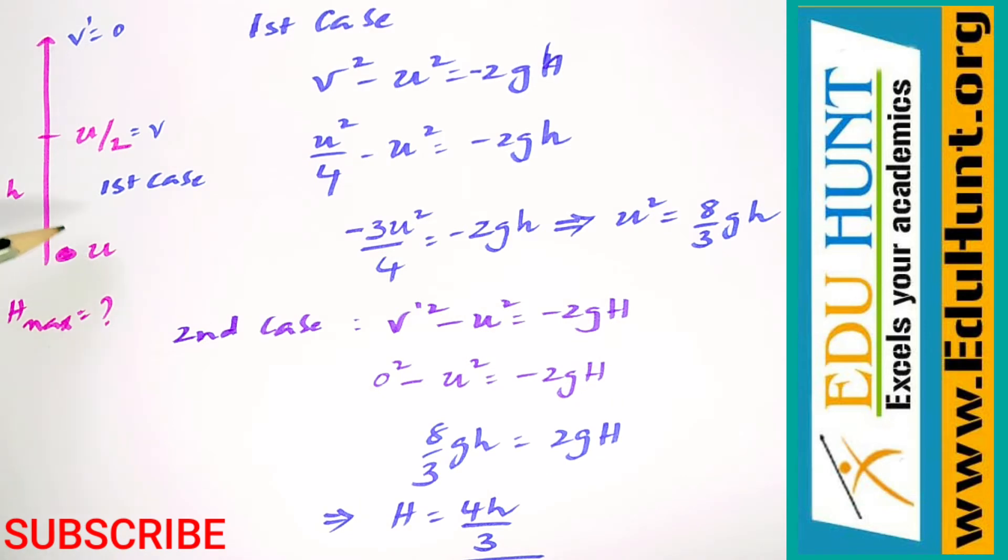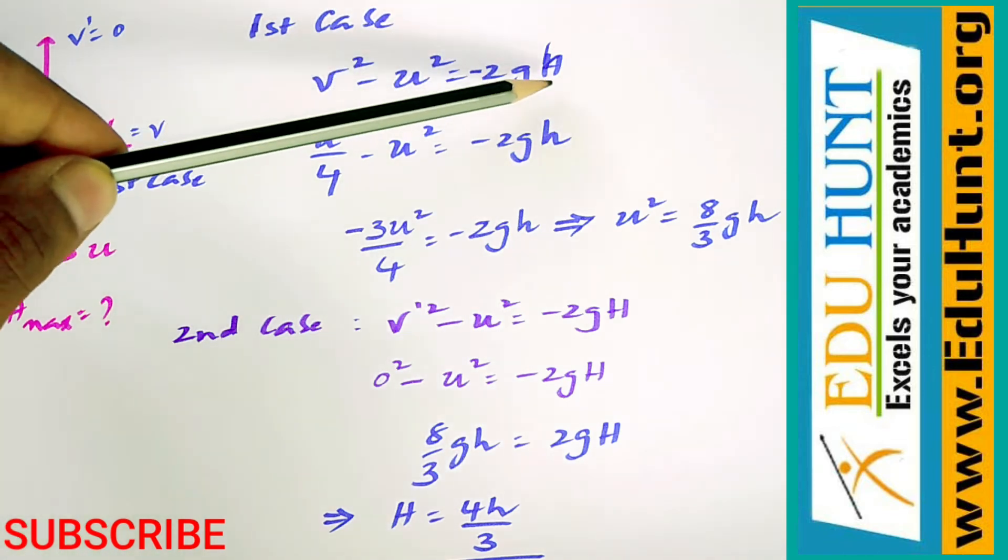To find the initial velocity, we can use the first case. In the first case, it is given that its velocity becomes half at height h. So if I use v² - u² = 2as...